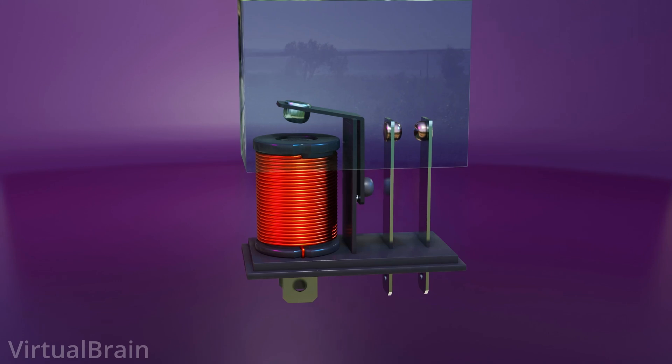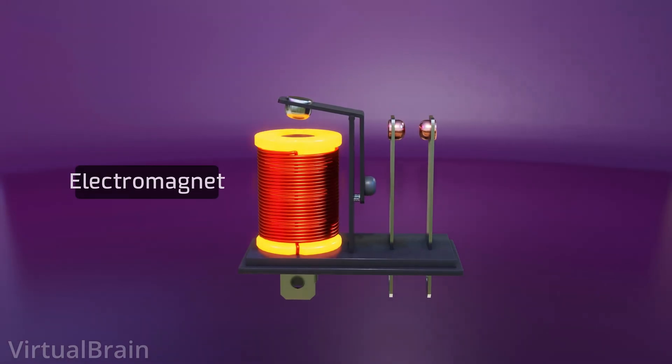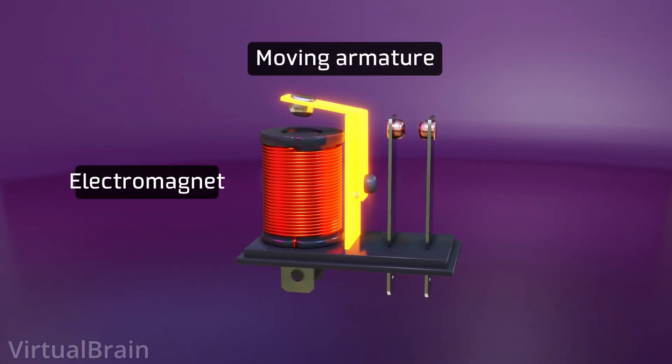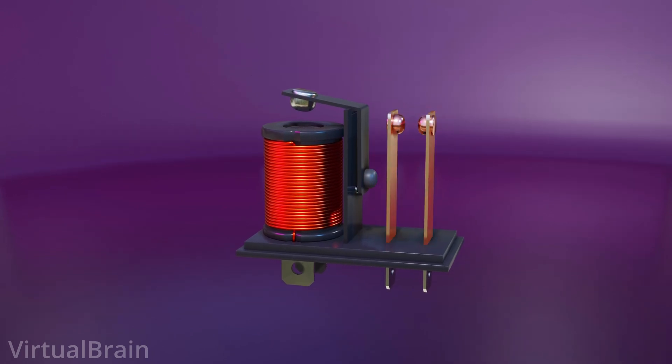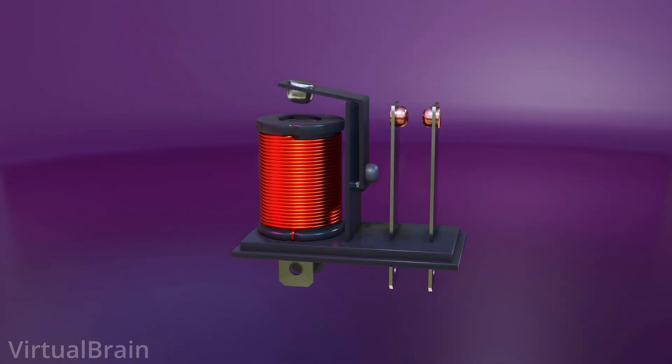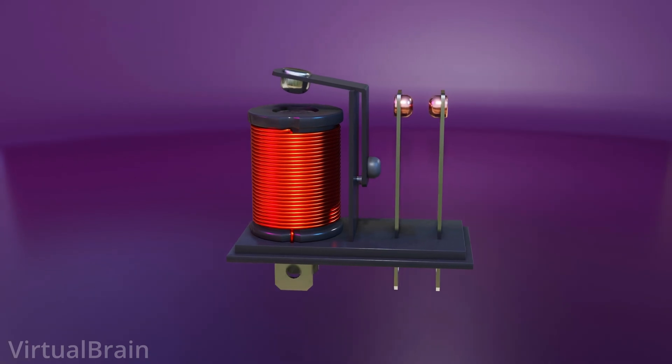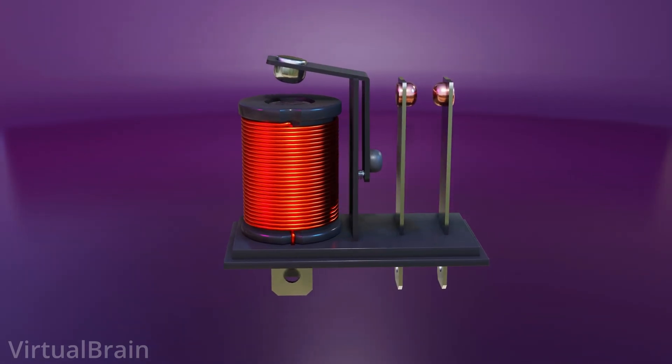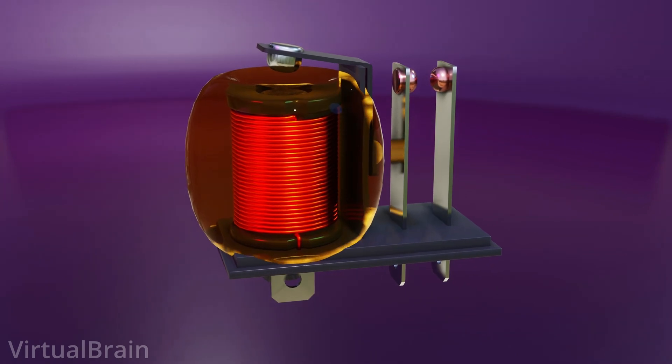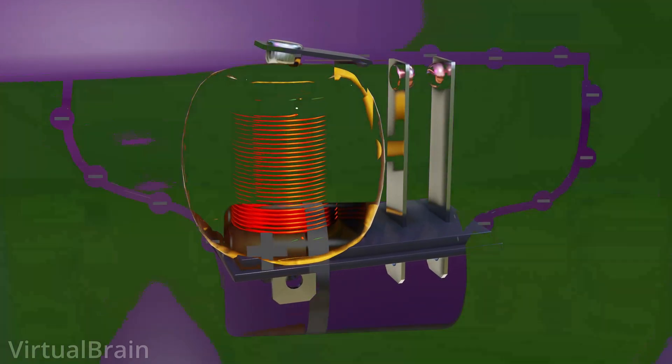These are mainly composed of three elements: an electromagnet, a moving armature, and a series of contacts. If we focus on the electromagnet, it will be connected to the controller circuit and, as its name indicates, when an electric current passes through it, a magnetic field will be formed, behaving similarly to a permanent magnet.